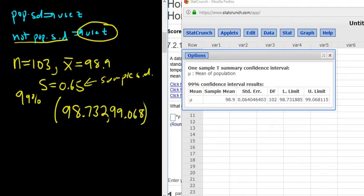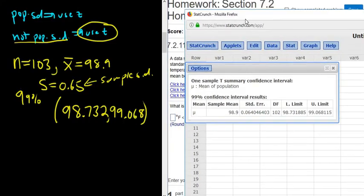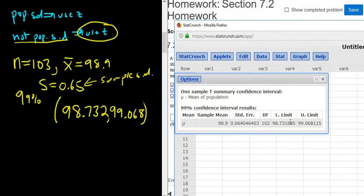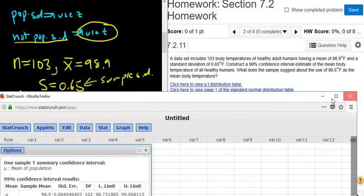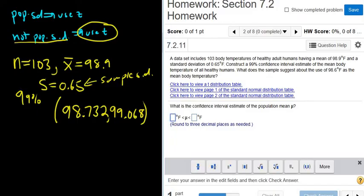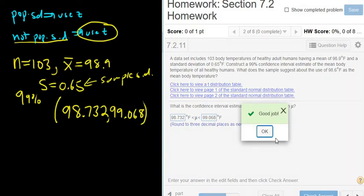And then 99.068. You have to be really careful with the rounding. It'll mark the whole thing wrong if you round incorrectly. It's always the lower and the upper, and if you were writing this on paper, you would put parentheses and a comma to separate the numbers. In Math Lab, they want you to enter it in the boxes. So in the left box, 98.732. And in the right box, 99.068. Let's try it. Check answer. Good job.